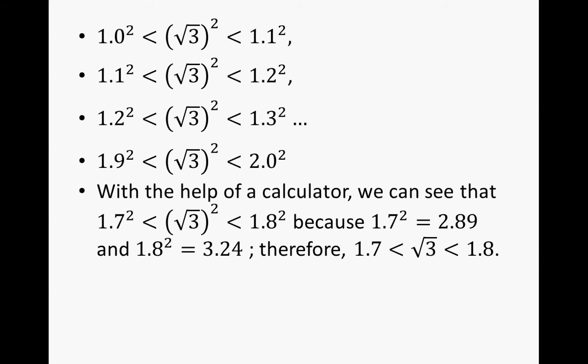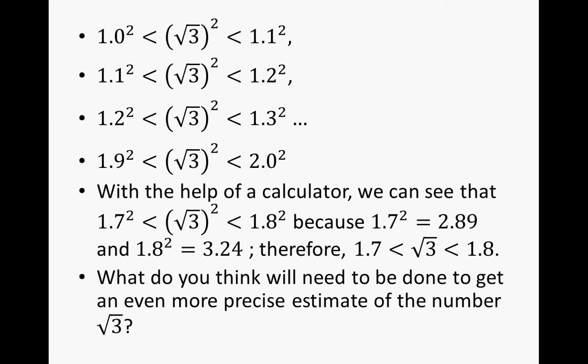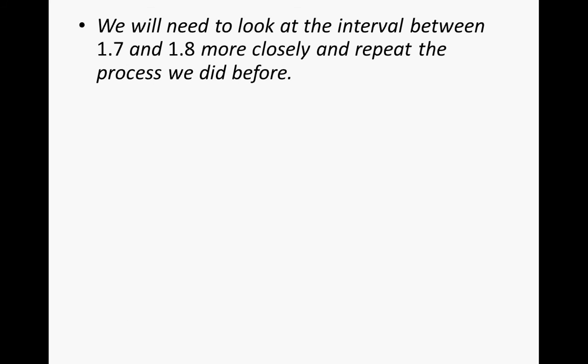With the help of your calculator, we can see that 1.7 squared is less than the square root of 3 squared, which is less than 1.8 squared, because 1.7 squared is 2.89 and 1.8 squared is 3.24. Therefore, 1.7 is less than the square root of 3, which is less than 1.8. To get an even more precise estimate, we will need to look at the interval between 1.7 and 1.8 more closely and repeat the process.